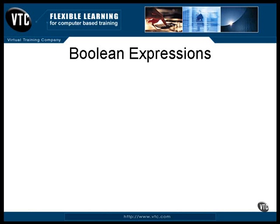The Java language includes a Boolean data type. A Boolean data type is always either true or false. The words true and false are keywords in the Java language. When you declare a Boolean variable, its default value is always false.